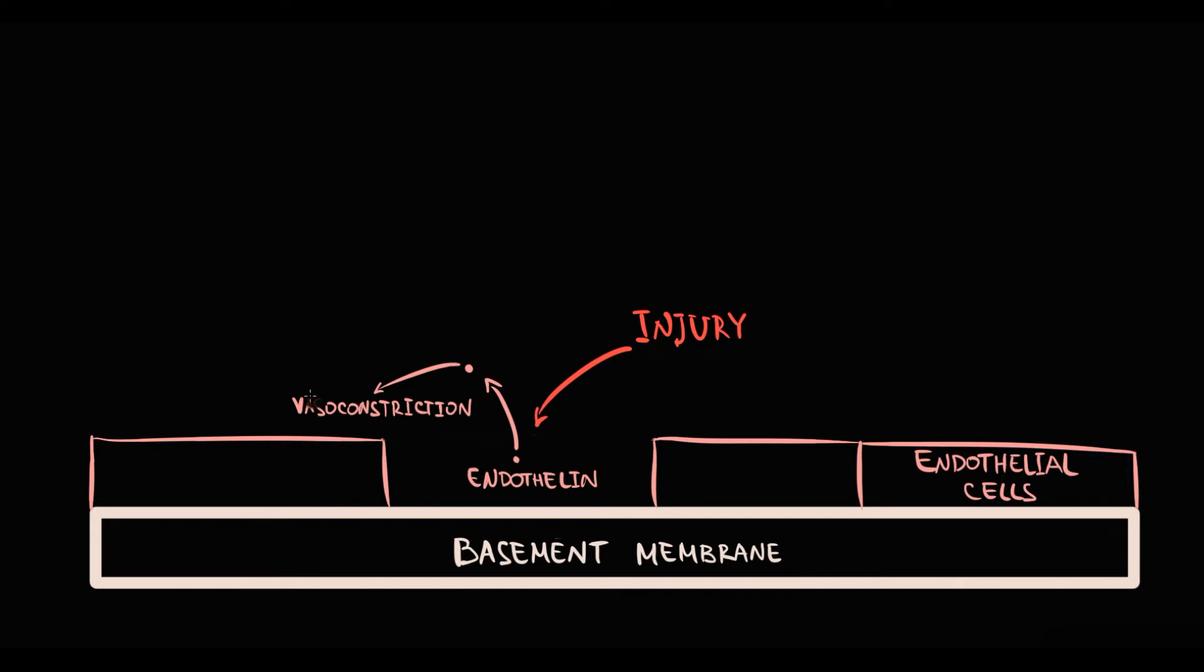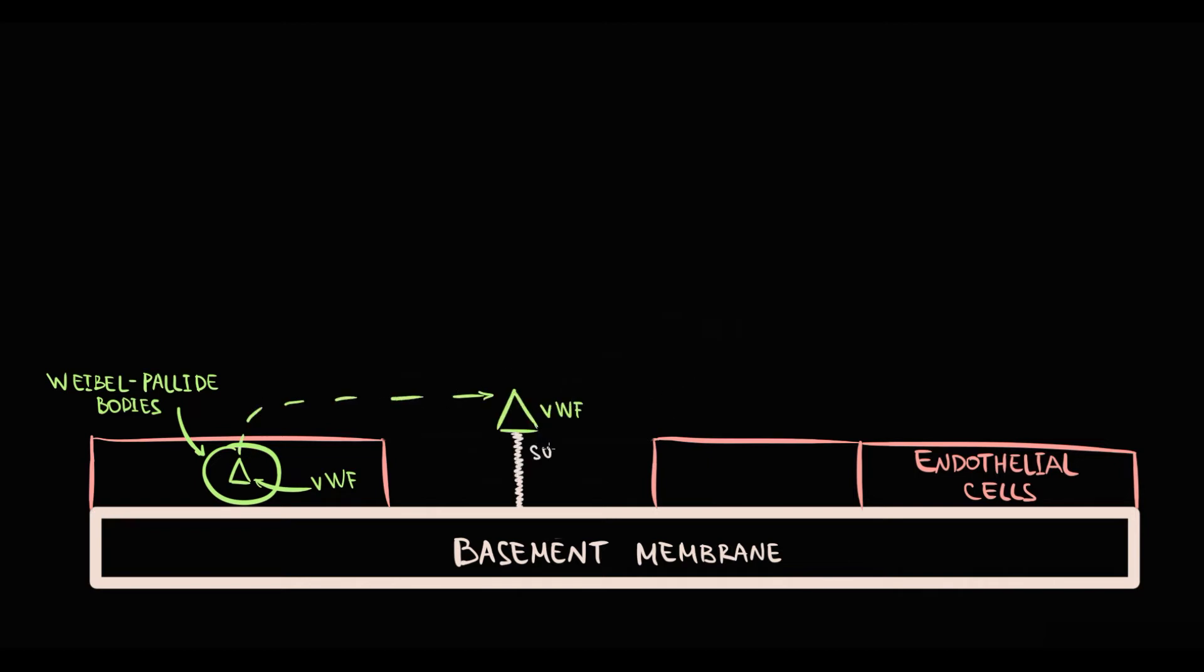After vasoconstriction, organism has to immediately cover and repair the damage area. In order to do this, endothelial cells release from Weibel-Palade bodies huge amount of von Willebrand factor. In the bloodstream, von Willebrand factor binds to subendothelial collagen under the disrupted endothelial cell.